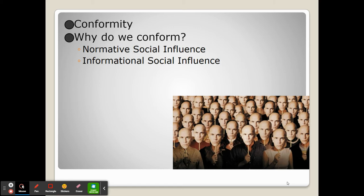We may also conform due to informational social influence, and this is when the group convinces us that we're wrong. A lot of the power of conformity is the unanimity of the group. If the group is not unanimous, there's a lot less likelihood that conformity will occur.